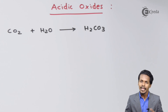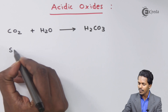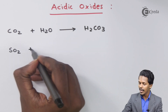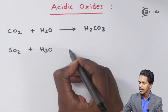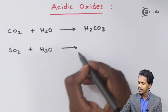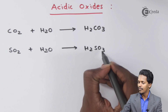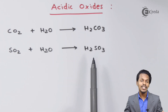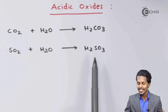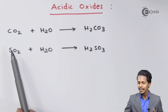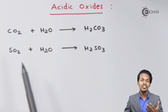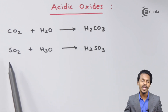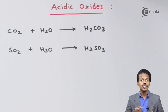The next example is sulfur dioxide (SO2). If SO2 is treated with water, the product we get is H2SO3, which is known as sulfurous acid. Since SO2 on reaction with H2O forms an acid, this oxide is known as an acidic oxide.